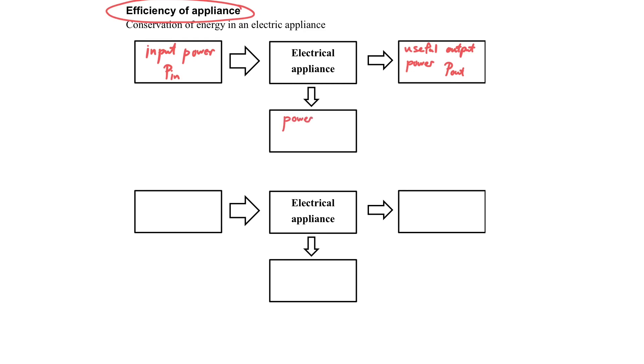You can see that in electrical appliances, there must be some power input, we call it P_in, and some power output. However, there is also some power loss most of the time.